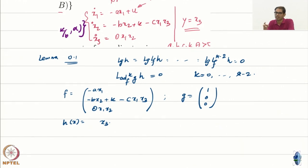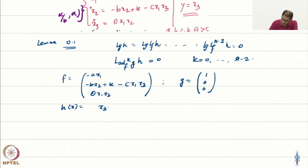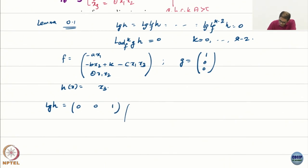Of course, one simple way to find relative degree is to start taking derivatives directly and find relative degree. But unfortunately, I have asked you to verify the lemmas, so we will actually have to compute all this. So if you see that the first term here is also lgh, because if I put k equal to 0, this is just lgh. So let us just compute lgh first. What is lgh? First I take partial of h with respect to x, what is it, partial h with respect to x, 0, 0, 1, and g is just 1, 0, 0, so obviously 0, done.